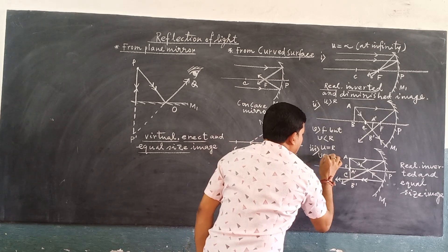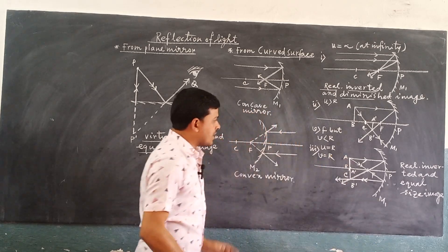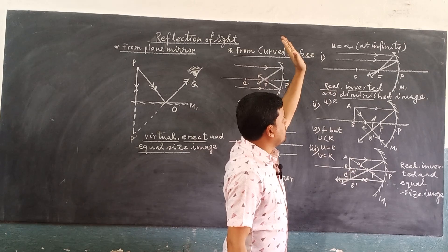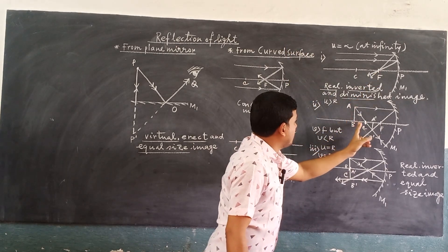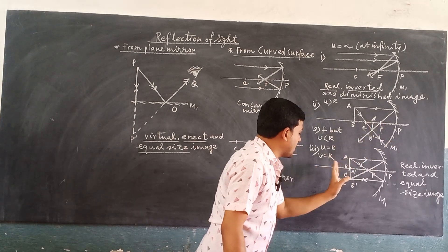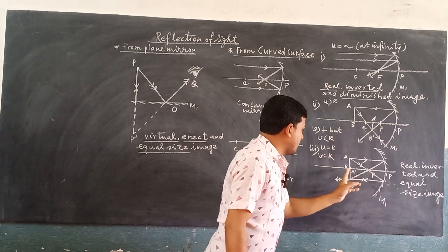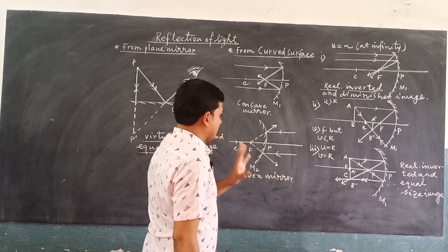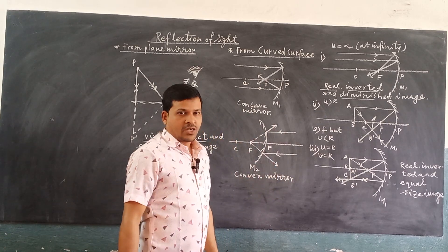To summarize the concave mirror cases: when the object is at infinity, the image forms at the focus; when the object is beyond C, the image forms between F and C; and when the object is at C, the image forms at C as well.